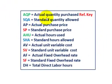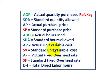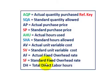For the key: AQP is actual quantity purchased; SQA is standard quantity allowed; AP is actual purchase price; SP is standard purchase price; AHU is actual hours used; SHA is standard hours allowed; AV is actual unit variable cost per hour; SF is standard unit variable cost per hour; AF is actual fixed overhead rate; SF is standard fixed overhead rate — both on a per direct labor hour basis; and DH is total direct labor hours for the period. That covers our different variances for direct materials, direct labor, and overhead.